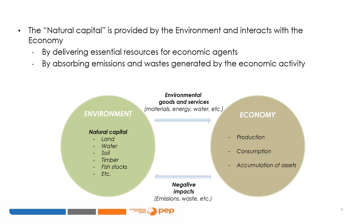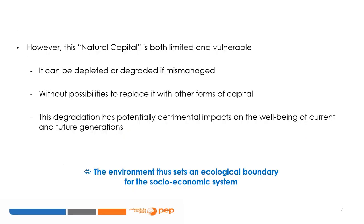This natural capital interacts with the economy by delivering essential goods and services for agents and by absorbing emissions and wastes generated by economic activity. However, this natural capital is both limited and vulnerable. Stocks of natural assets can be renewable if managed sustainably, but they can also be depleted or degraded if mismanaged, with potentially detrimental impacts on the well-being of current and future generations. Given that replacing natural capital with other forms of capital is often impossible or carries significant risks, it is generally considered that the environment sets an ecological boundary for the socioeconomic system.